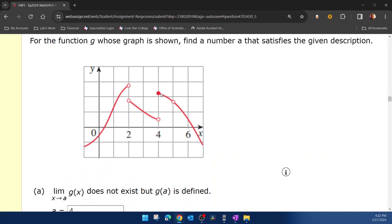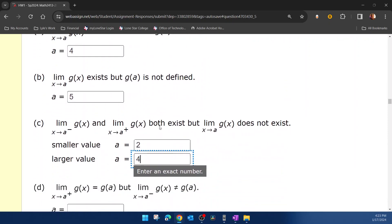But the limit as we approach 4 from the left is a different height than what f of 4, or in this case g of 4, is. So again, that's going to be 4.